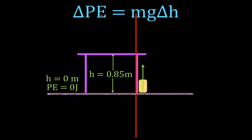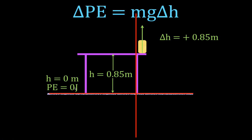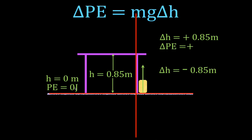When we have the specific equation, the change in potential energy equals the mass times g (9.81 m/s²) times the height through which the object is moved. We define height as zero — and therefore potential energy as zero — at the bottom. Here we have the object at the floor. We raise it 0.85 meters to the table. If I move it up 0.85 meters, that's a positive change in height and a positive change in potential energy. If I move it back down, that's a negative change in height and a negative change in potential energy.